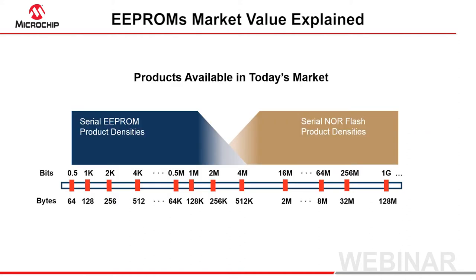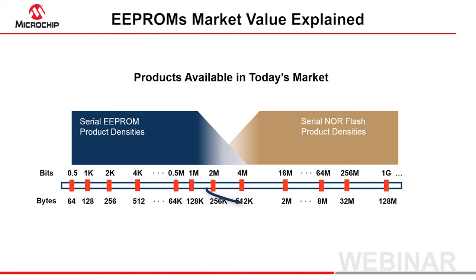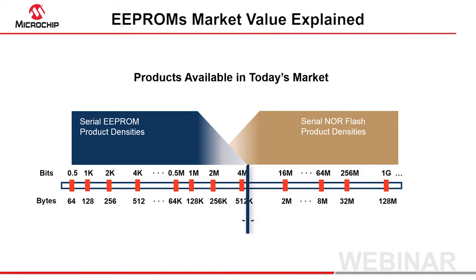This chart shows densities. Serial EEPROMs have been around for about 30 years now. At first, before the rise of low-cost Flash, they were pretty widely used. But today, they have survived only at the very lowest memory densities. Serial NOR Flash densities start about here, and many Flash suppliers don't even bother to offer parts below 16 megabits. And frankly, no EEPROMs make monetary sense above about 4 megabits. Let's show you why that is.